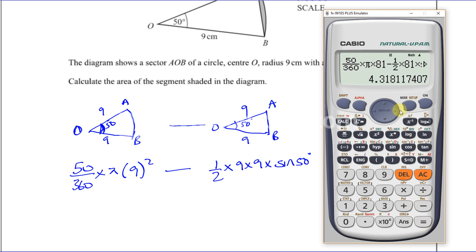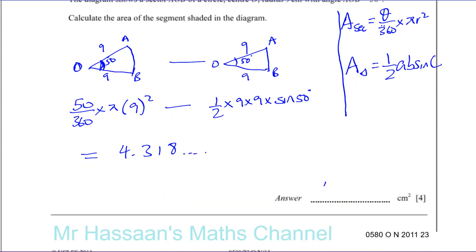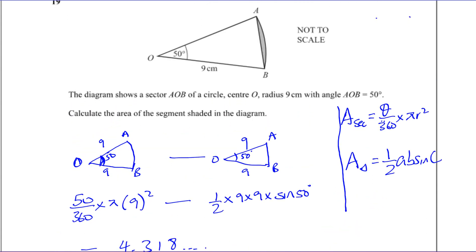The area is going to equal 4.318 continuing on. We need to round to three significant figures, so that gives you 4.32 centimeters squared. So we found the area of the whole sector, which is like the pizza slice, minus the area of this triangle shape, and you're left with the area of the segment. I hope that was quite clear to you. Thank you for watching.